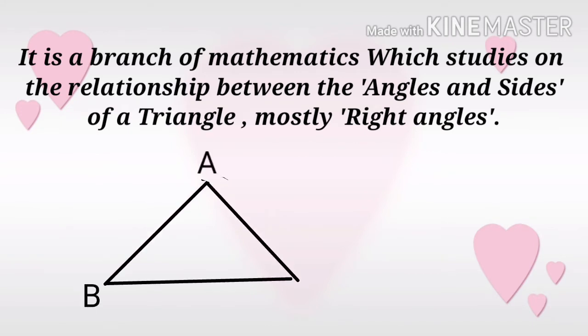Consider a triangle ABC with vertices A, B, C. Angle A, Angle B, and Angle C are the angles. Let small a be the side opposite to angle A, small b be the side opposite to angle B, and small c be the side opposite to angle C.